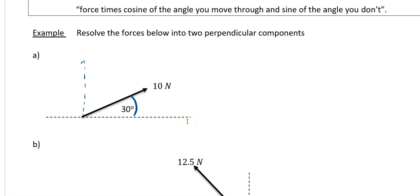This example says resolve the forces below into two perpendicular directions. And I've added on a dash line for the vertical direction here, just to keep me right. So I'm going to resolve horizontally. And what I have is 10 cos 30. And if you did that in my calculator, it would come out as 8.66 newtons to two decimal places.